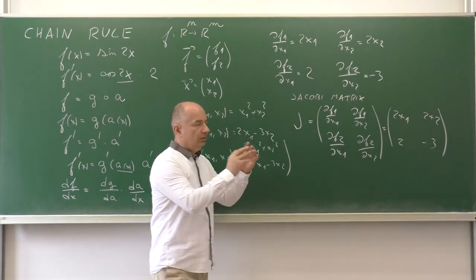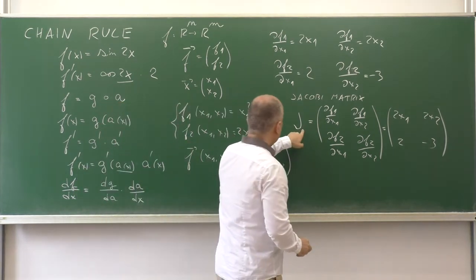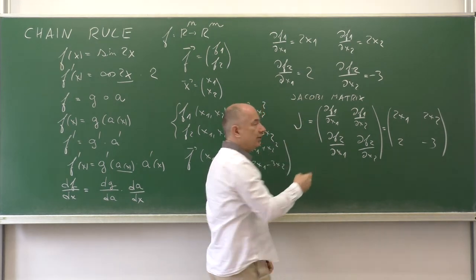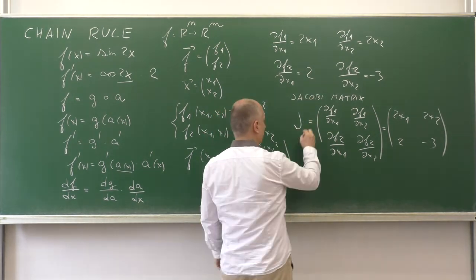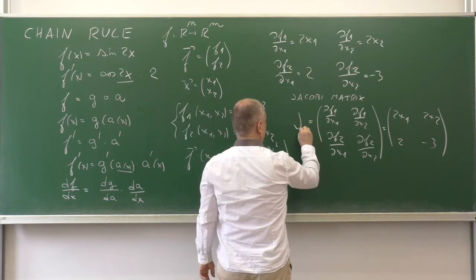If we have not just one, but more functions, then we write a subscript here to denote Jacobi matrix of which function it is. So, if we have the function f, it would be J_f.